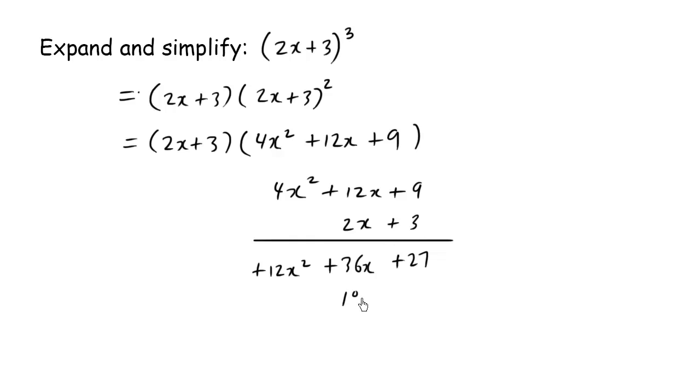2x times 9 is 18x. 2x times 12x is positive 24x squared. And don't forget this last part here. 2x times 4x squared is going to be positive 8x cubed.